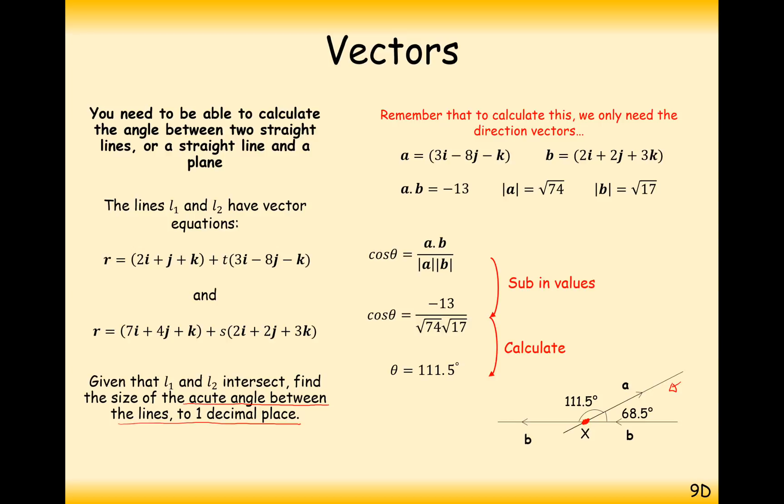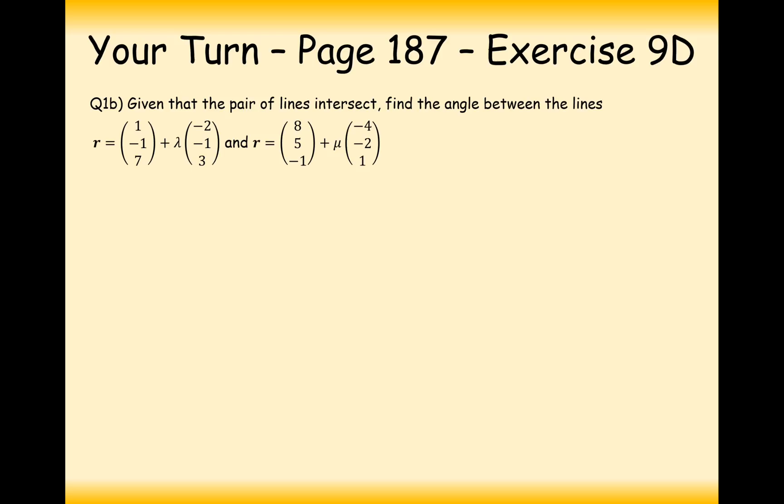The acute angle between these two vectors is going to be this angle here, so 68.5. If you ever get a situation where you want an acute angle but you've actually got an obtuse angle, do 180 minus it and you're probably going to be getting the correct answer. Think about what the diagram will look like. So 68.5 is your answer there.